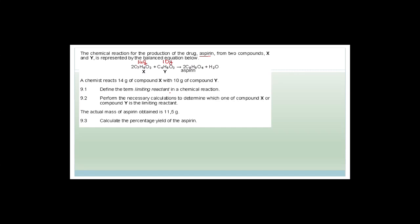Make sure you have learned all definitions from the textbook. The limiting reactant is the reactant that is used up first, and it controls how much product is made. Now: perform the necessary calculations to determine which of compounds X or Y is the limiting reactant. First, work out the number of moles of each. The molar mass of X (C₇H₆O₃) is (7×12) + (6×1) + (3×16) = 84 + 6 + 48 = 138 g/mol.